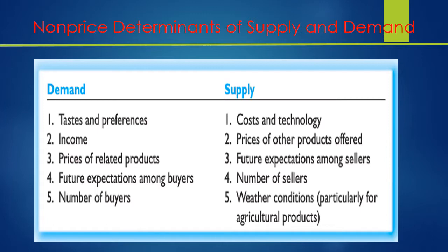The prices of related products also matter — if you're going to buy a product and it is too expensive, and there is a related product you can get, then you may go to that related product. Future expectations among buyers is another non-price determinant, and obviously the number of buyers — the more people there are in a certain area or region, the more demand there will be for products and services.